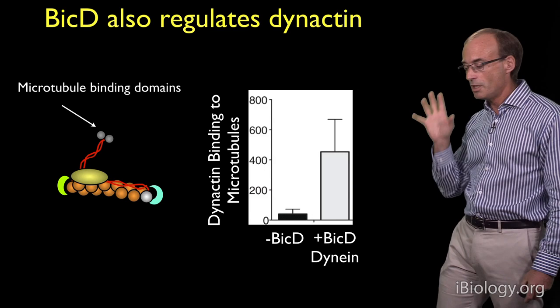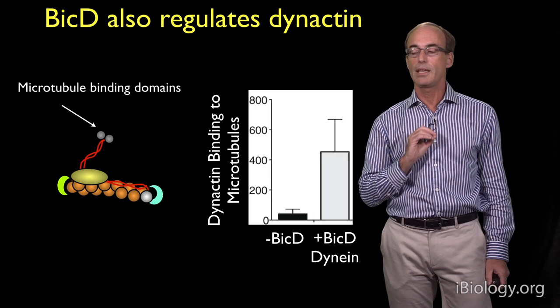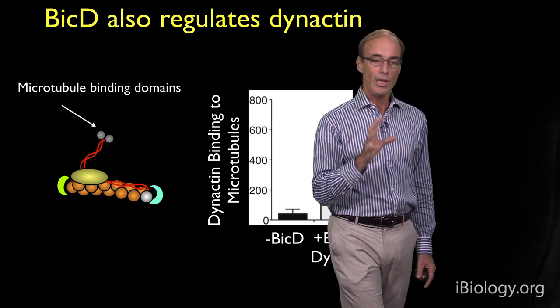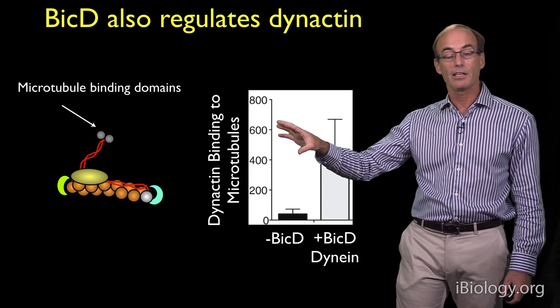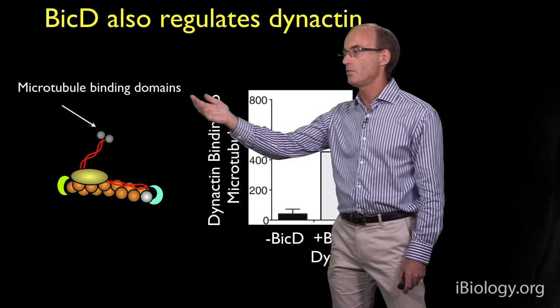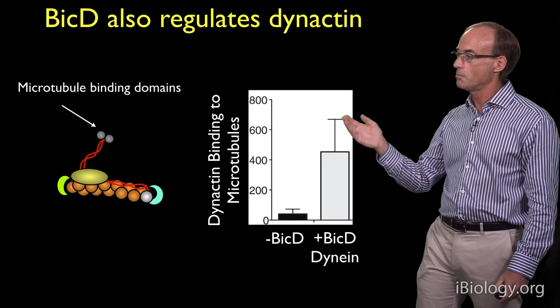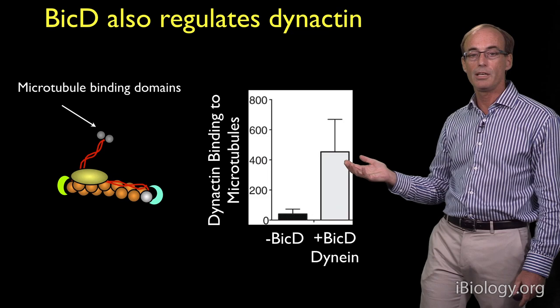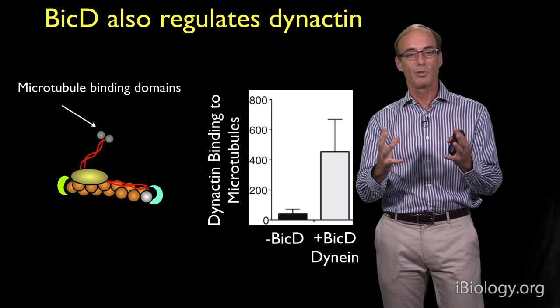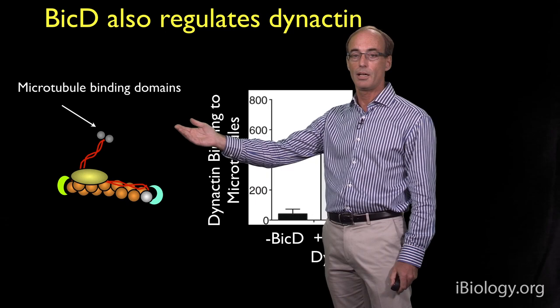In addition to regulating dynein, it also appears that BicD can regulate dynactin as well. The P150 subunit has a microtubule binding domain at the end of its antenna-like structure. But with single molecule studies, if we looked at microtubule binding by dynactin alone, or even dynactin with dynein, we found that dynactin had very, very low binding to the microtubule, suggesting that this microtubule binding domain is somehow repressed. But when combined with BicD and dynein, the microtubule binding of this dynactin component increases — so it appears that complex formation also converts the microtubule binding activity of dynactin from a repressed to an active form.